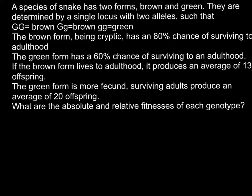The brown form, being cryptic, has an 80% chance of surviving to adulthood. The green form has a 60% chance of surviving to adulthood.